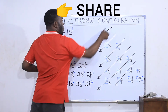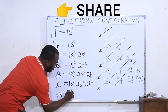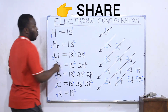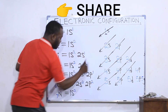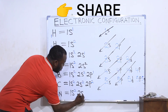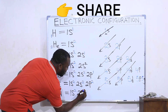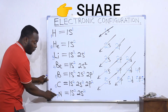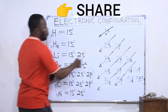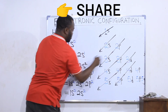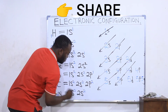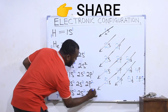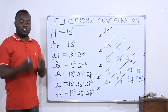For nitrogen, element number seven with seven electrons: 1s collects two, remaining five. Then 2s collects two, remaining three. Then 2p collects the remaining three electrons. Nitrogen's configuration is 1s² 2s² 2p³. Note that p can carry up to six, so three is well within its capacity.